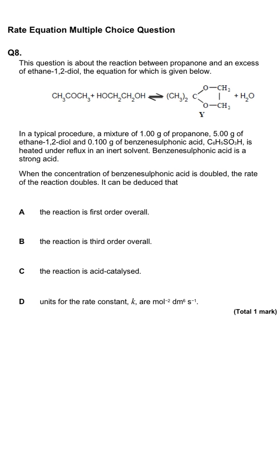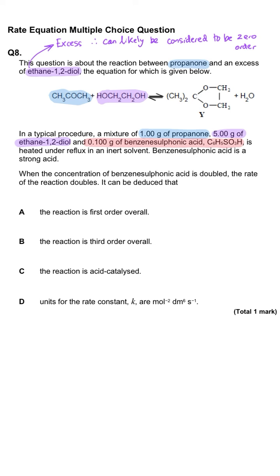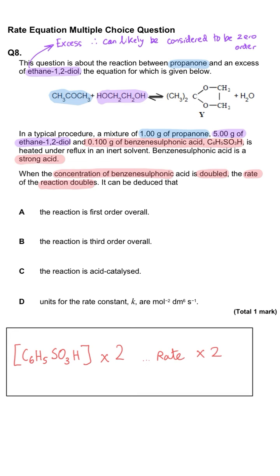This question is about the reaction between propanone and an excess of ethane-1,2-diol. In a typical procedure, 1 g of propanone, 5 g of ethane-1,2-diol, and 0.1 g of benzene sulfonic acid are heated under reflux in an inert solvent. When the concentration of benzene sulfonic acid is doubled the rate doubles. Option A — it can be deduced the reaction is first order overall — is incorrect, as we only know benzene sulfonic acid is first order. Option B — the reaction is third order overall — we cannot confirm this either.